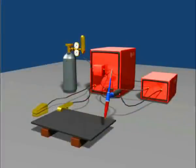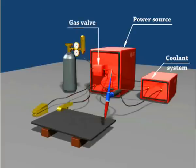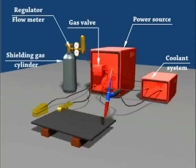The TIG welding system consists of a power source, coolant system, gas valve, regulator flow meter, and shielding gas cylinder.